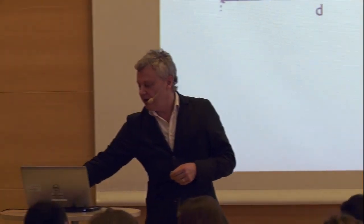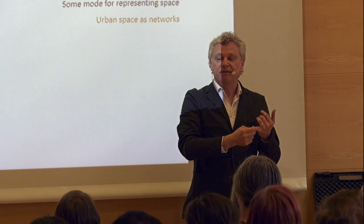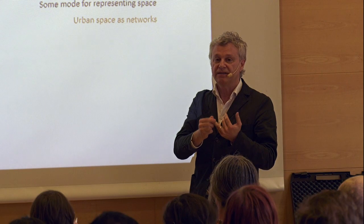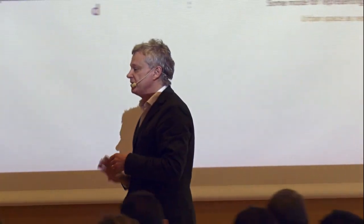We are trying to do the architecture of the city, not the complete city, so we need to translate these ingredients a bit. Our mode of representing will be using networks. Some measure of attraction is not, for instance, the size of the city or population — it's the spatial density and differentiation, two variables that could create different kinds of attractions. And distance is actually distance in space, but space can be measured in different things.